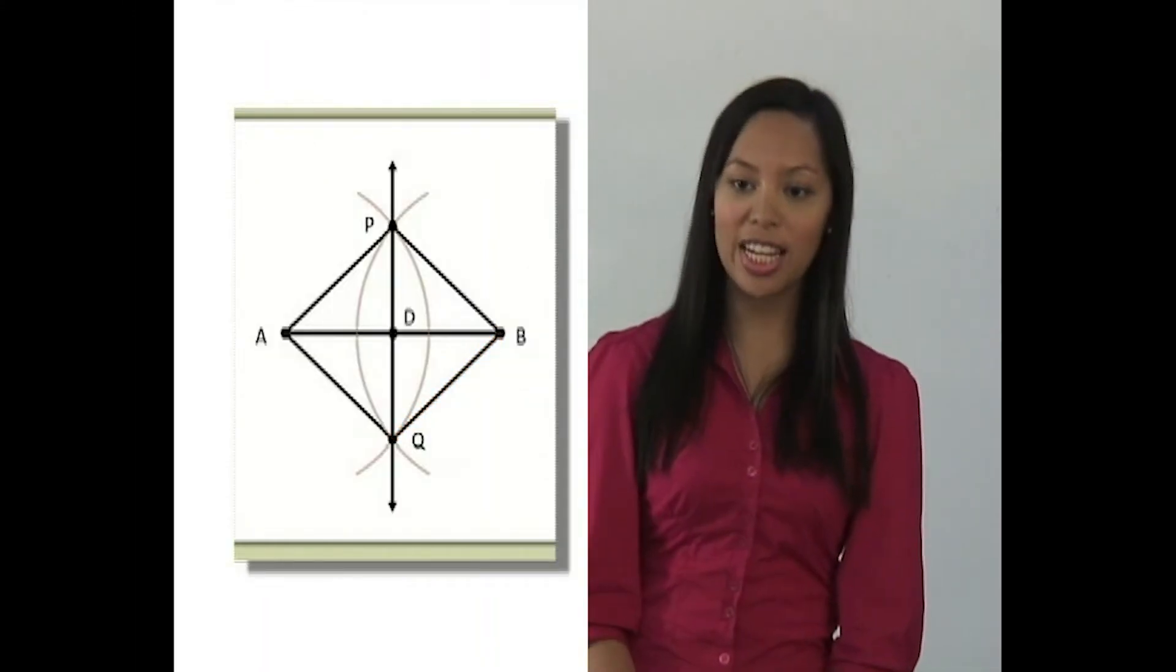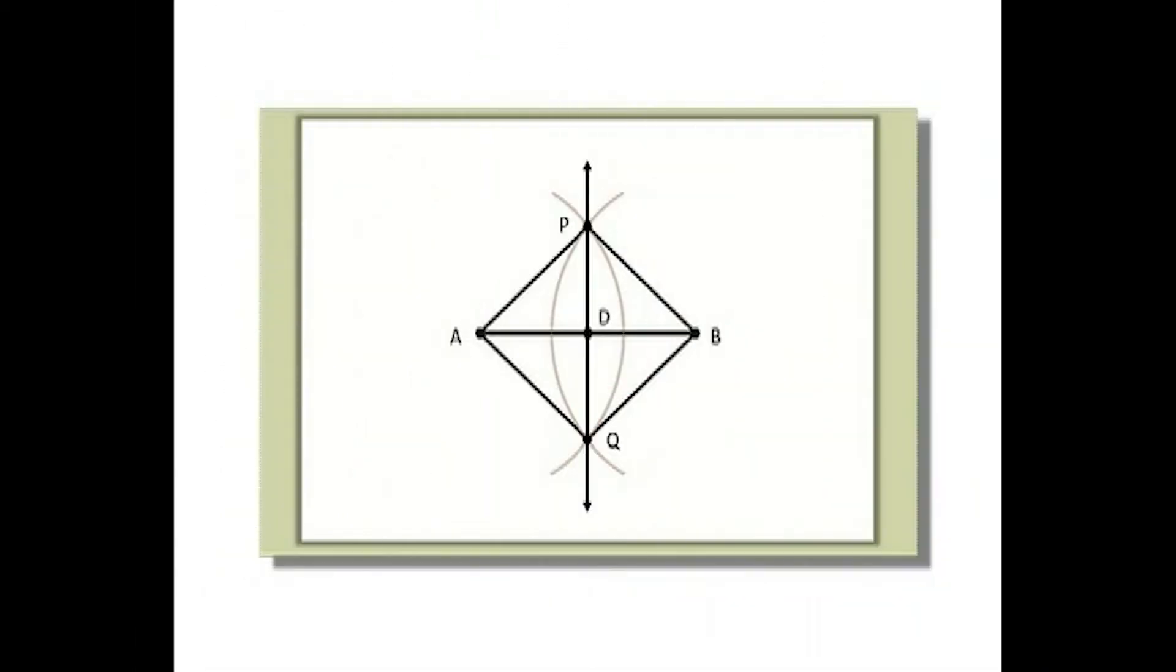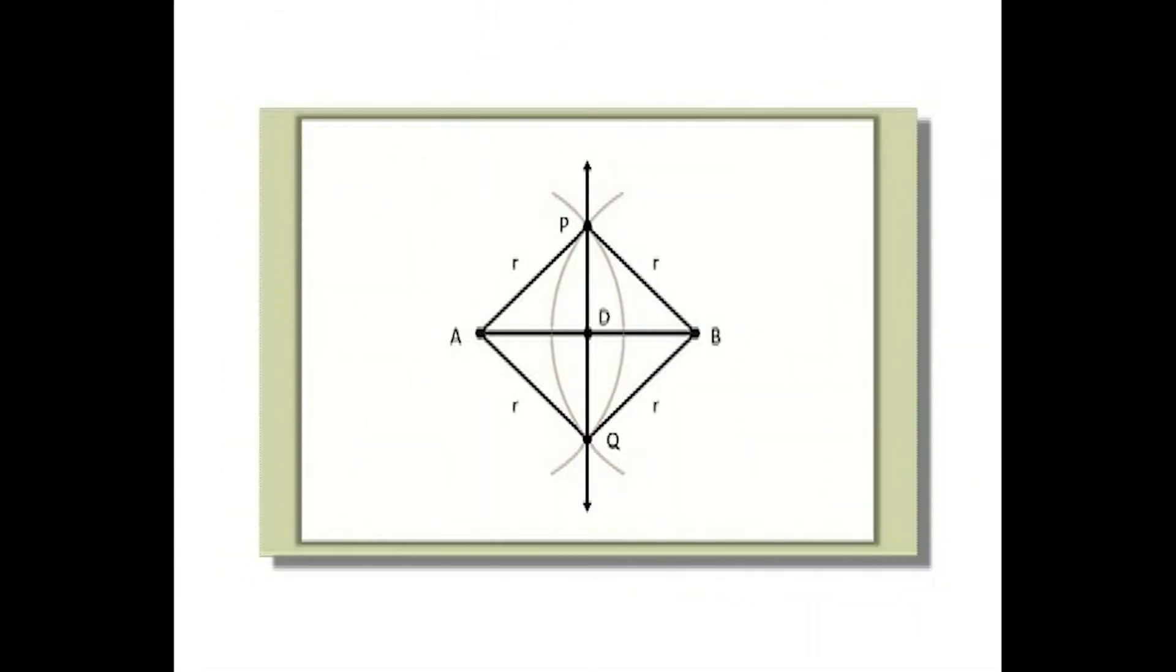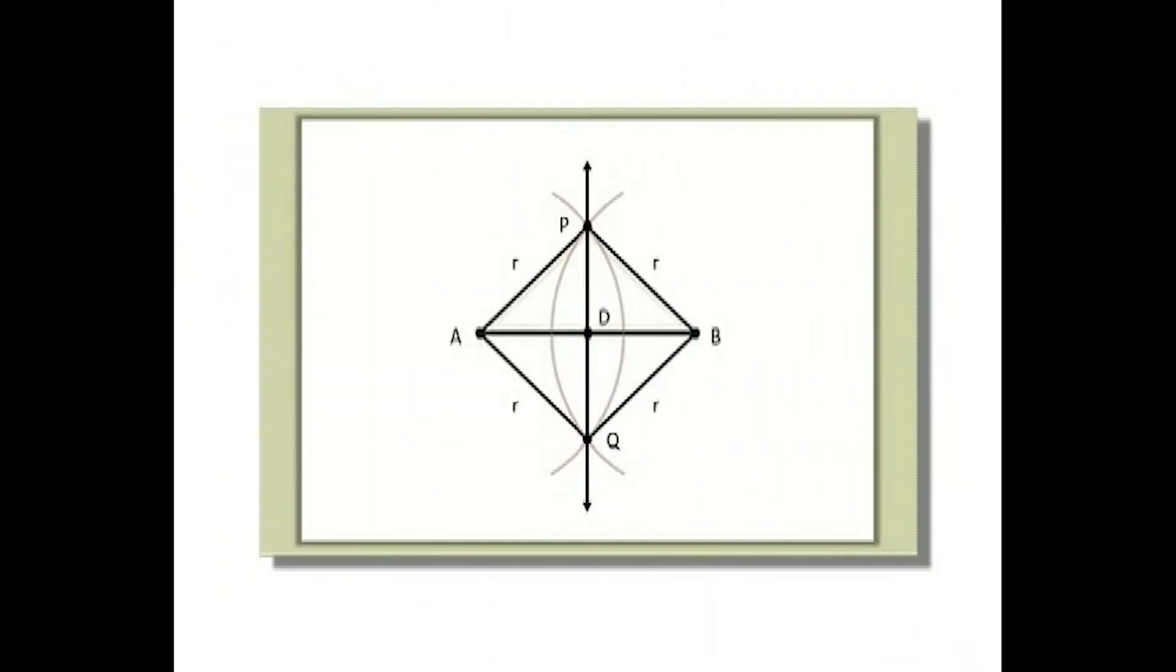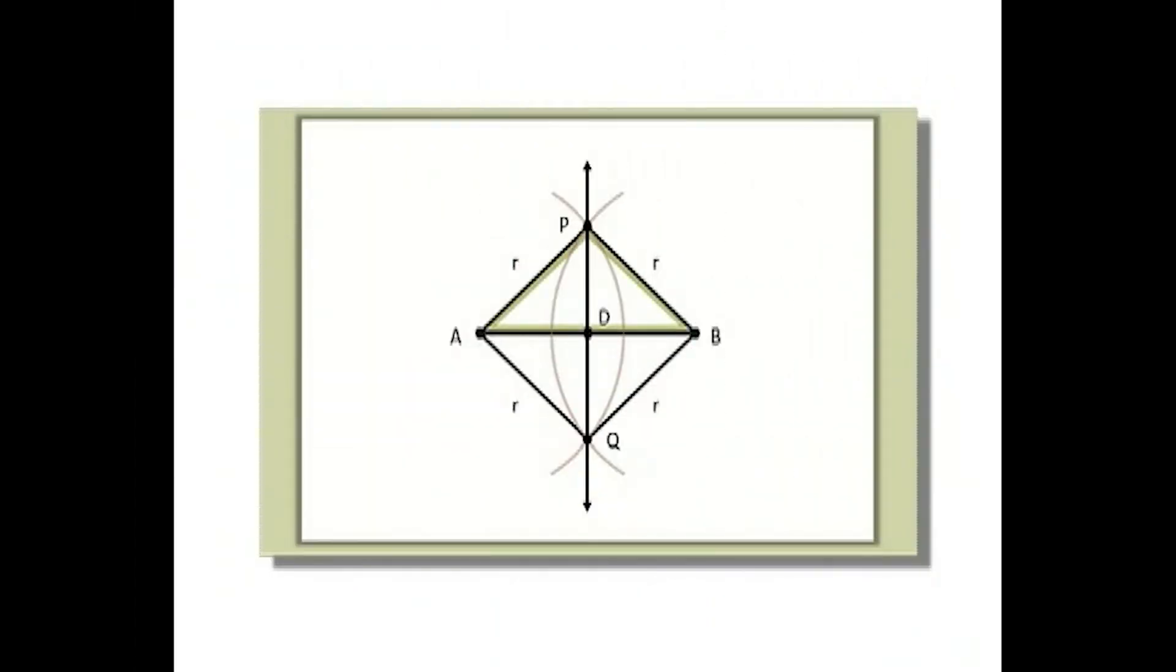That's right, Jay. And what is their length? They're all the length of R. Very good, Marise. This makes triangles PAB and QAB isosceles.